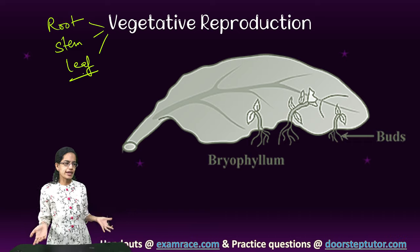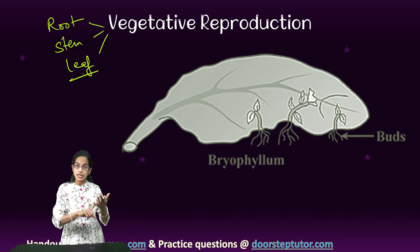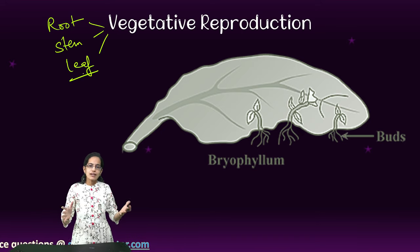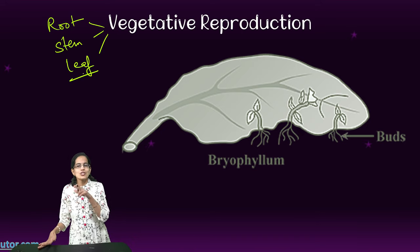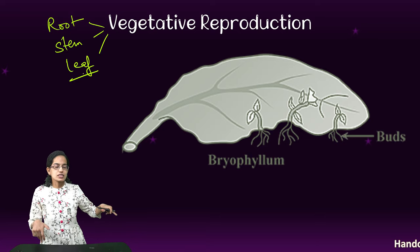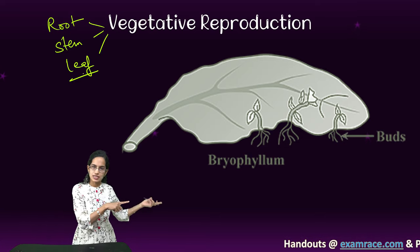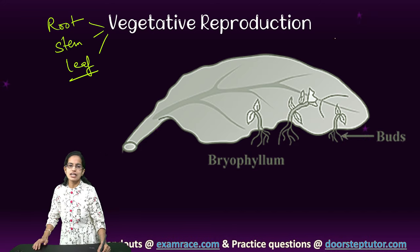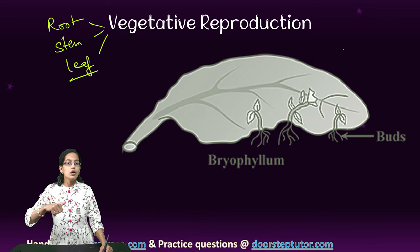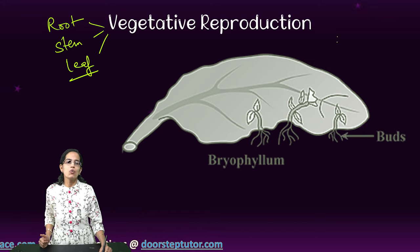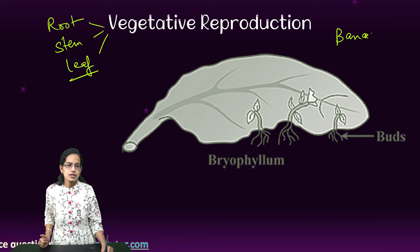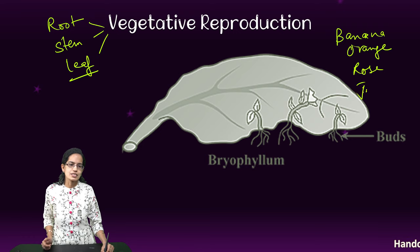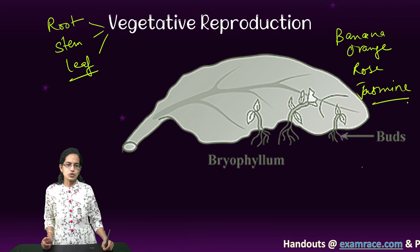A very important question: there are many species — banana, orange, rose, jasmine — that do not have seeds now. Why? Because of vegetative reproduction, they have lost the capability to have seeds, and that is a natural process of evolution. So these are the common species that reproduce by vegetative reproduction.